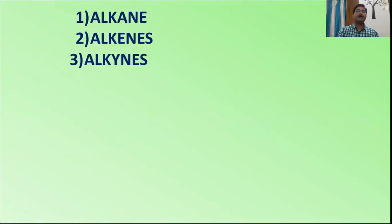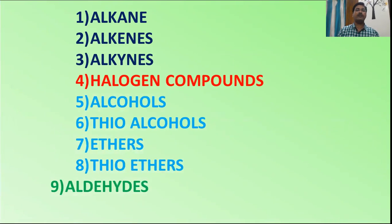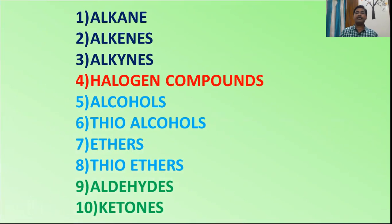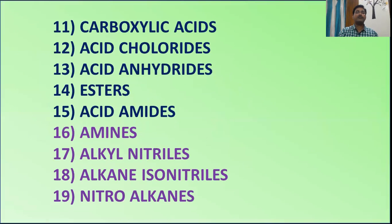We have different carbon compounds: alkanes, alkenes, alkynes, halogen compounds, alcohols, thioalcohols, ethers, thioethers, aldehydes, ketones, carboxylic acids, acid chlorides, acid anhydrides, esters, acid amides, amines, alkyl nitriles, isonitriles, and nitroalkanes. All these compounds, when treated with hydrogen iodide in the presence of red phosphorus, simply convert into the alkane.